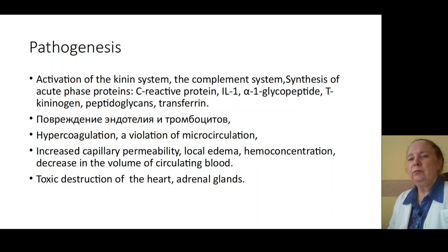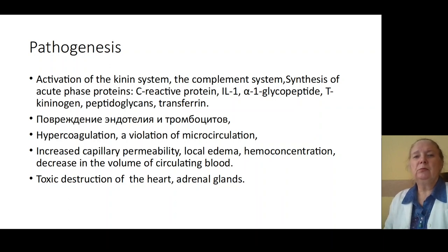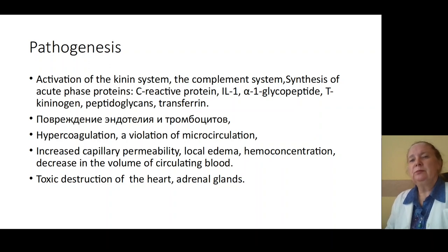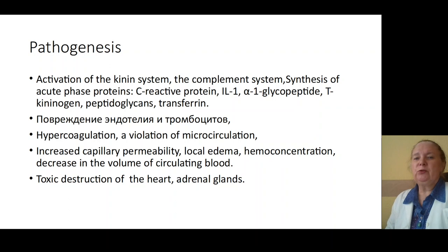Destruction of endothelium and destruction of blood cells, formation of microthromboses, activation of kinin-kallikrein system, causing formation of hypercoagulation and disordered microcirculation. This is characterized by endotoxinemia, exotoxinemia, increasing permeability of blood vessels, formation of local edema, GABA concentration, disturbances of microcirculation, and destruction of different tissues — for example, toxic destruction of the heart, adrenal gland.